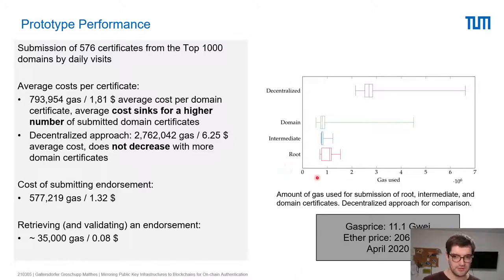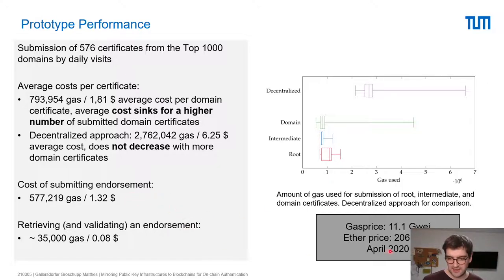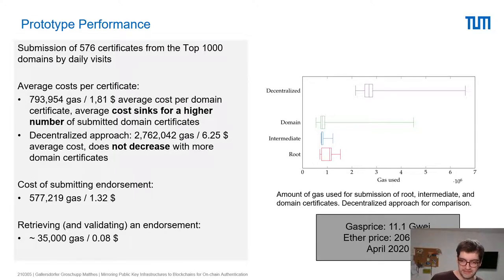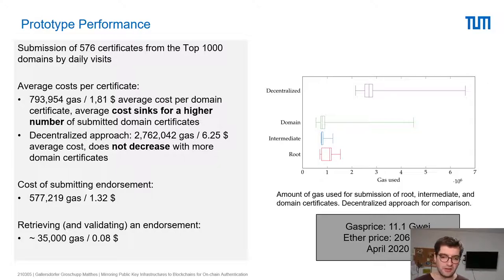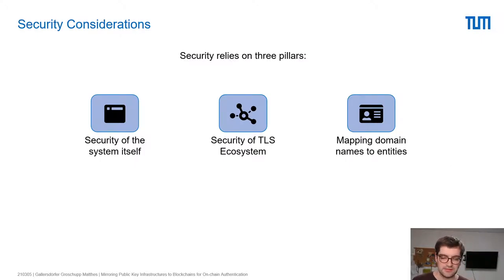Box plots show the distribution of these costs. The dollar values are from April 2020, so higher Ether prices and higher gas prices due to Ethereum network congestion make the system quite expensive today. However, this is not an issue unique to our system — any application currently running on Ethereum faces these extreme gas costs.